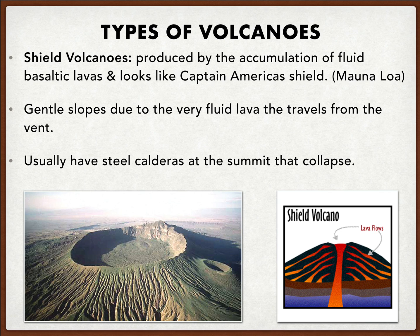Moving forward, let's look at shield volcanoes. When I think of shield volcanoes, I think of Captain America's shield because it looks like a shield — it can be tall, but it's very broad. It has gentler slopes because as the volcano runs at the top, it's not very explosive, so the material slides down on either side and creates these very gentle slopes. Shield volcanoes are produced by the accumulation of fluid basaltic lavas and usually have steep calderas at the summit that collapse. An example of that would be Mauna Loa.